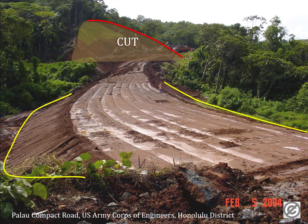In the foreground, the original ground surface was much lower than the current roadway, as shown by these yellow lines. The soil has been placed in this area to raise the ground surface. We call this a fill area of the roadway.